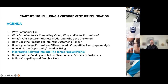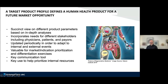Incorporating relevant information into the target product profile. Target product profiles came about in the late 1980s as an FDA tool to help stimulate drug development, developed between the FDA and pharmaceutical companies. When you work in a larger pharma or biotech company, the target product profile is a key portion of your program — there are dedicated people whose entire job is working on these. It's a succinct view of different product parameters based on in-depth analysis, incorporating needs from physicians, patients, and payers.